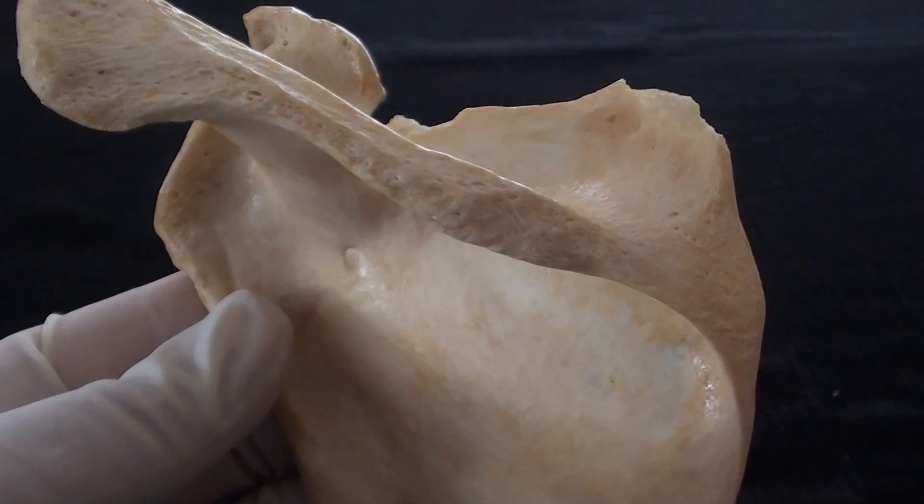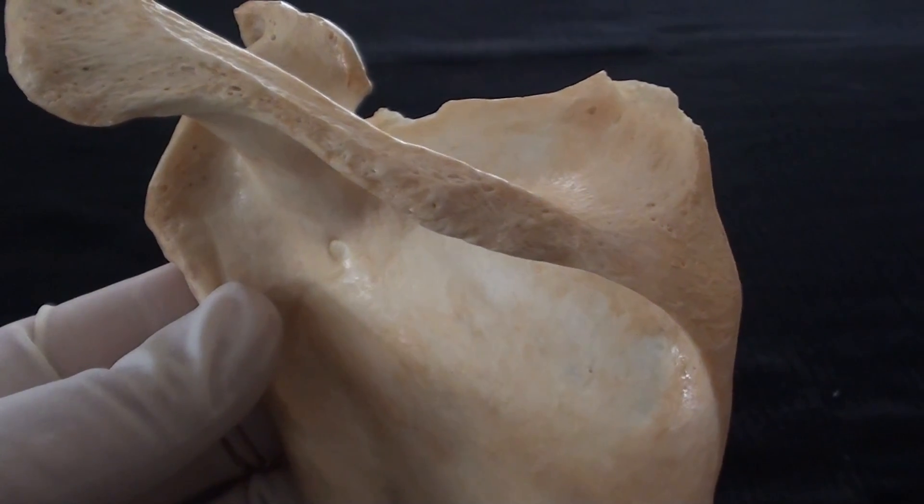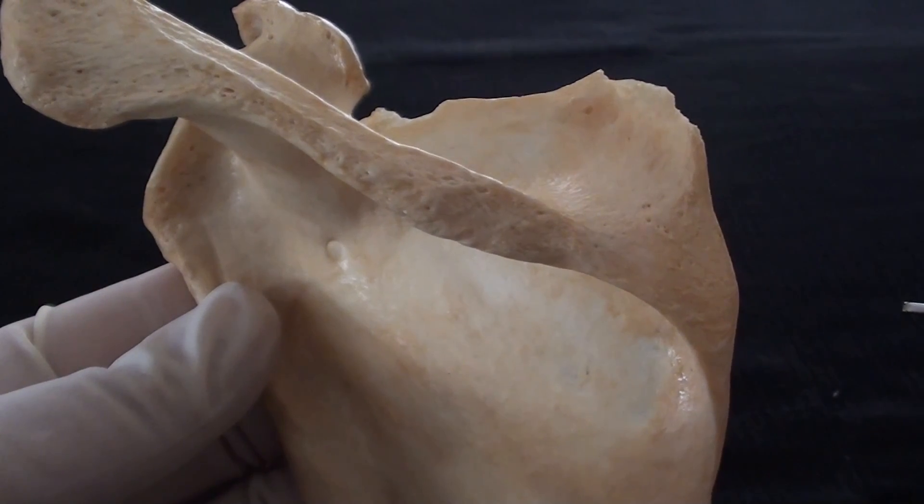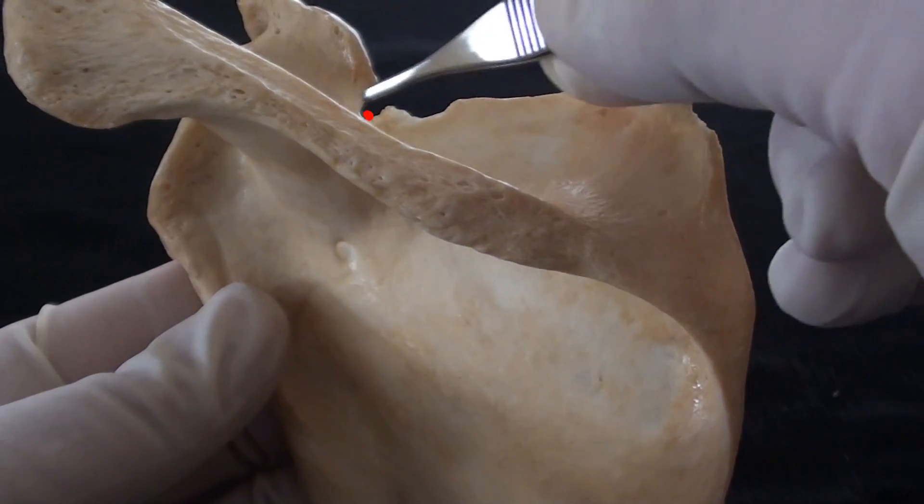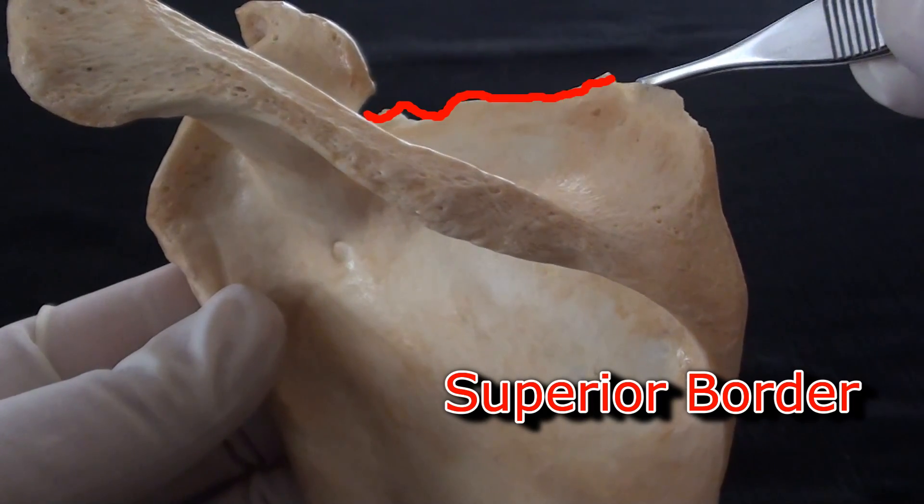Scapular main part being triangular will demonstrate three different margins and three different angles. This is superior border of the scapula.